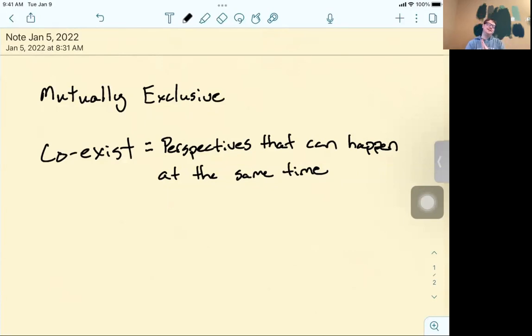All right, now if coexist means that they can happen at the same time, can anybody think or guess what maybe mutually exclusive means? Um, maybe it's someone with like a whole different perspective than others. I think you're on the right track. It definitely does involve a perspective that would be really different than somebody else. Does anybody else want to give a try or add something to it?